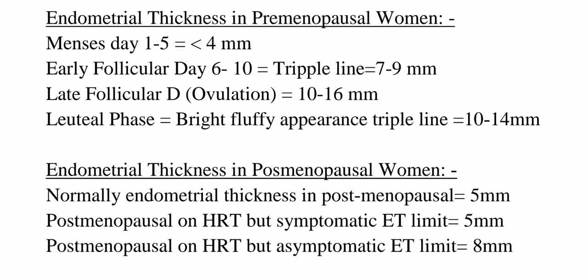In the late follicular and ovulation phase, the cutoff value is 10 to 16 mm. In the luteal phase, when we have the bright fluffy appearance of the triple line, 10 to 14 mm is considered the normal cutoff value for endometrial thickness.